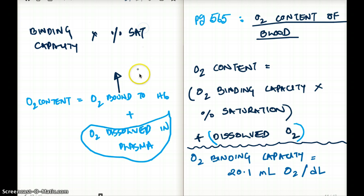How much saturation there is is going to give us how much bound of that substance there is. The binding capacity times the percentage that is saturated is going to give us oxygen bound to hemoglobin. And since we're measuring oxygen, oxygen binding capacity times percent saturation.